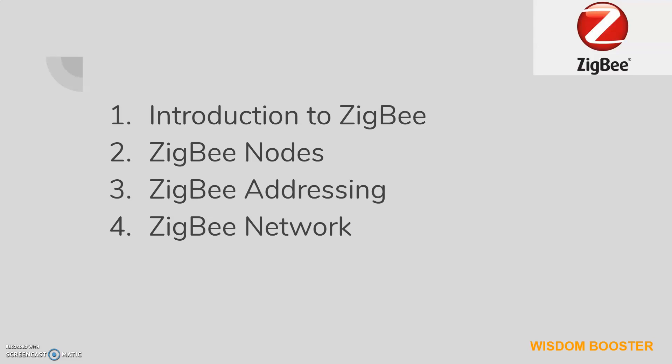Here are the topics I will cover in this series. First I will give an introduction to ZigBee — what ZigBee is, on which frequencies it works, and what features it provides. Then I will discuss networking, addressing, and the kinds of nodes involved. At the end I will show a real-time example on a ZigBee microcontroller demonstrating home automation.